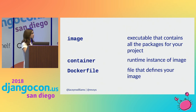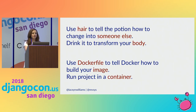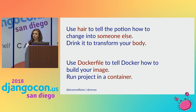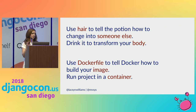So to restate: you use this hair to turn into someone else and then you drink that potion to transform the way that you look. You use the Dockerfile to tell Docker how to build your image, and then you run your project in a container. That's the analogy more explicitly, if that helps you.